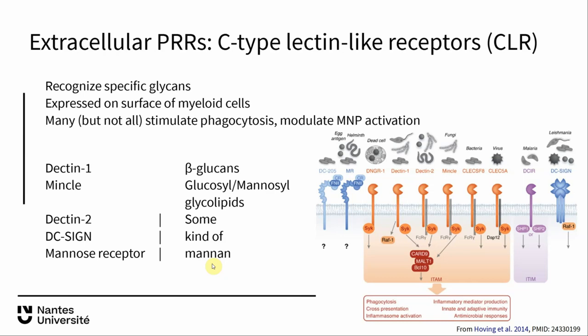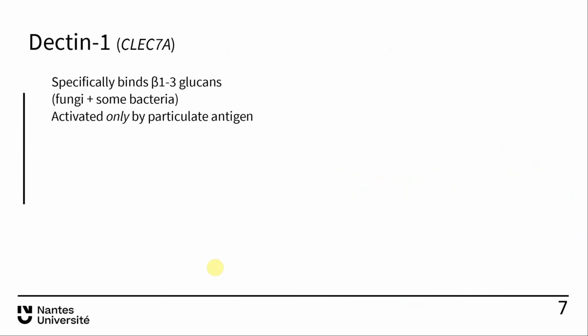Dectin-1, gene name CLEC7A, is specific for beta-1,3-glucans — glucose linked beta-1,3 to another glucose molecule. This glycosidic linkage is found on the outer coat of fungi and some bacteria, but not in any mammalian glycan. So it's a specific chemical bond recognized by Dectin-1. Interestingly, Dectin-1 is only activated by particulate antigen: a yeast cell binds several molecules of Dectin-1, activating the signaling cascade and phagocytosis. Soluble beta-glucan gives little activation.